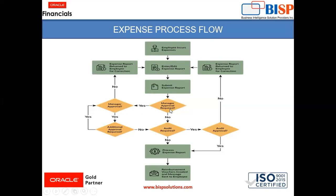If manager approval is required, it depends upon the manager whether the manager will approve the expense report or not. If the manager does not approve, the expense report will be returned to the employee for correction and the employee needs to re-enter it. But if the manager gives approval and no auditor approval is required, the expense report will get processed and reimbursement will be done.